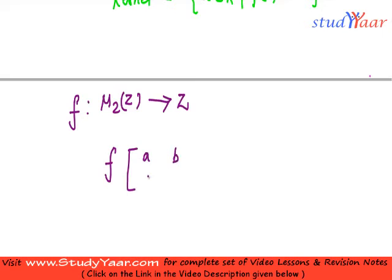Now we are going to take an example and understand these concepts better. My example is, let us suppose I have a function from M₂(Z) to Z and it is defined as this: f of a 2 by 2 matrix which is like A, B, B, A, then f of this is equal to A minus B.